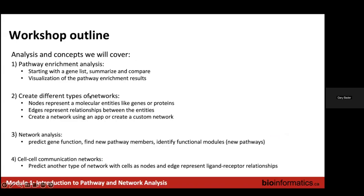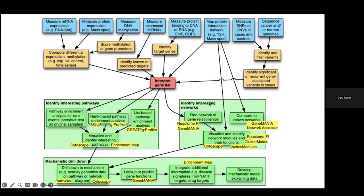Just to link what I've talked about to the workshop topics: we'll start by covering details about pathway enrichment analysis, starting with your gene list of interest and doing all the types of analyses resulting in the nice visuals we showed. We'll also cover network analysis, which can help identify interesting biological processes we might not know about from pathway databases. The advantage of pathways is that we know a lot about them, making results easy to understand. The disadvantage is that pathways don't cover all genes in the genome — most genes are not linked to a pathway.